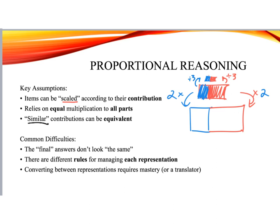We call this similar contributions, and we consider these equivalent. These pictures here are equivalent. Common difficulties here is that the final answer doesn't look the same. So, let's take a quick example. If we had two-thirds, that's the same as four-sixths, which is the same as 0.5 divided by 0.3 repeated. And we could also go larger, 12 over 18. The difficulty is that these answers don't actually look the same. The other difficulty is that there are different rules for maintaining and representing each way of representing a number. Lastly, converting between representations requires mastery. I'm going to do a brief coverage of all of these in the next couple minutes.